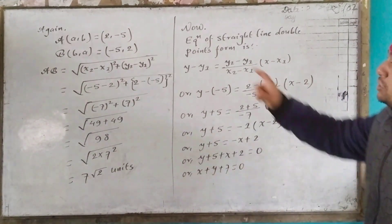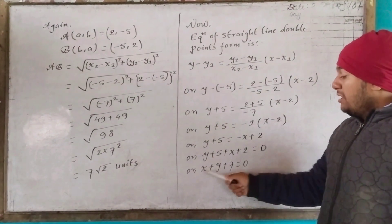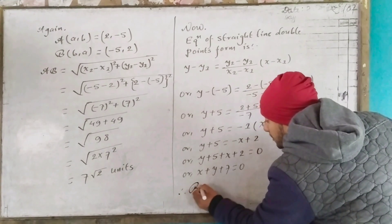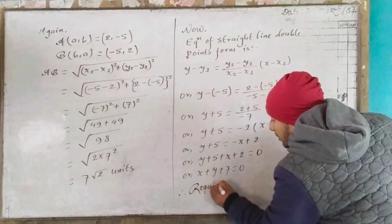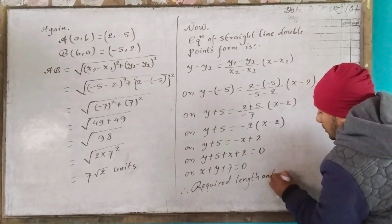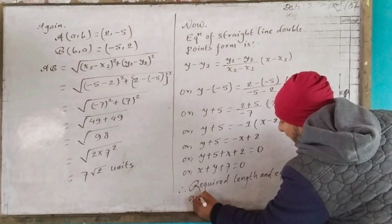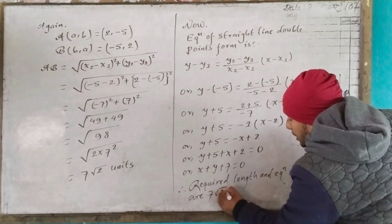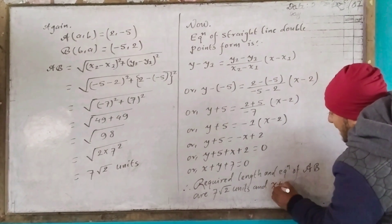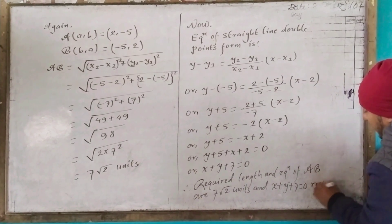So the straight line equation is x plus y plus 7 equal to 0. The required length AB is 7 root 2 units and the equation of AB is x plus y plus 7 equal to 0.